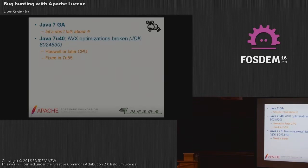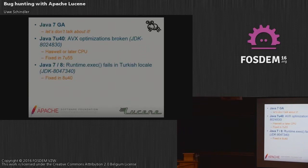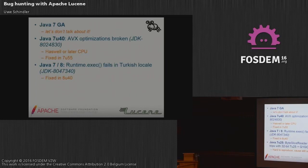We also found other smaller bugs through locale randomization — for example, we found that Runtime.exec() does not work in the Turkish locale because of a stupid bug: it was using String.toUpperCase() or String.toLowerCase() with the default locale. In Turkish, the lowercase and uppercase 'i' are different from English — one has a dot, one does not. Because of this, something in the class initializer of ProcessBuilder didn't work. This was fixed in Java 8. There's also another bug which is not fixed to this day — we've had to work around it since 7 update 25, and the cause is still unknown.